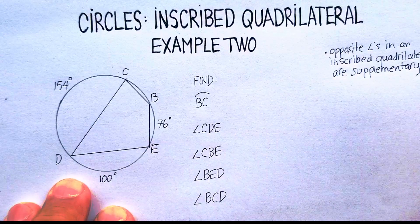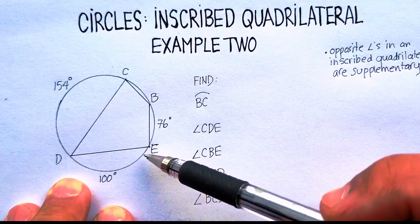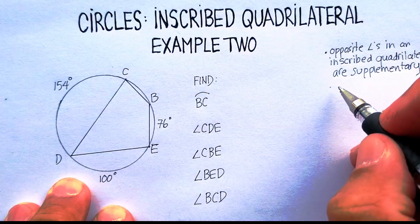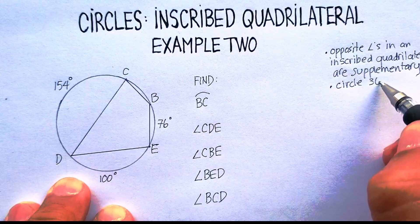The other thing that I also keep in mind is that I know that the circumference of a total circle are equal to 360 degrees. So circle 360 degrees.